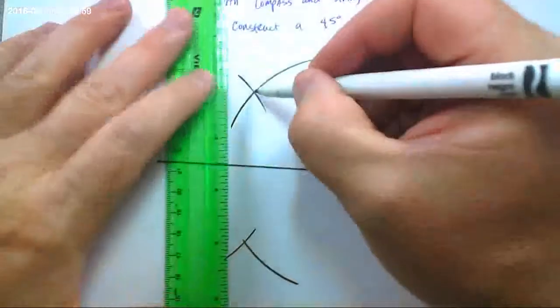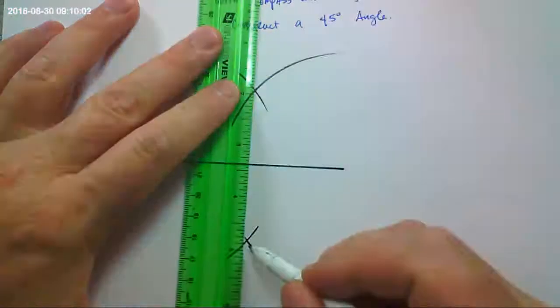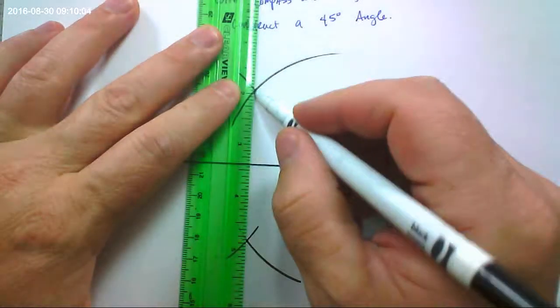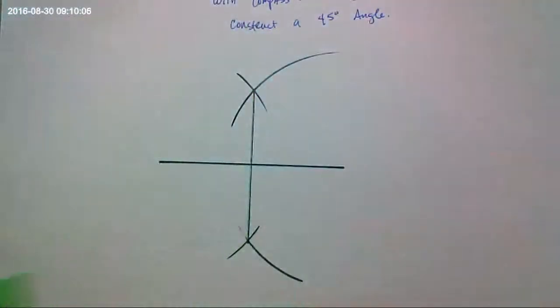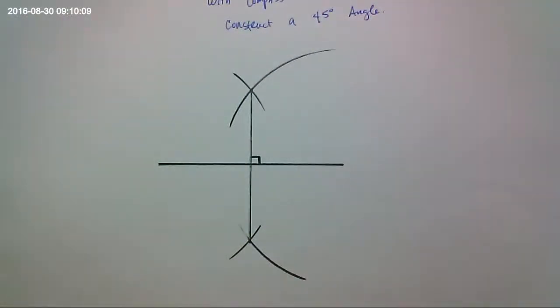Alright. So from there to there. Boom. Perpendicular bisector. That's 90 degrees right here. Yeah?